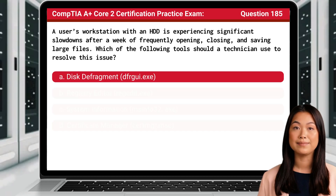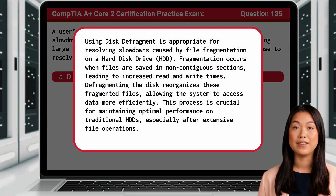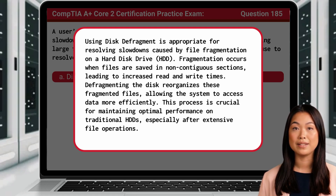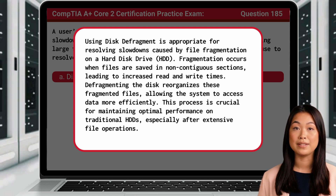The answer is A. Disk Defragment. Using disk defragment is appropriate for resolving slowdowns caused by file fragmentation on a hard disk drive (HDD). Fragmentation occurs when files are saved in non-contiguous sections, leading to increased read and write times. Defragmenting the disk reorganizes these fragmented files, allowing the system to access data more efficiently. This process is crucial for maintaining optimal performance on traditional HDDs, especially after extensive file operations.